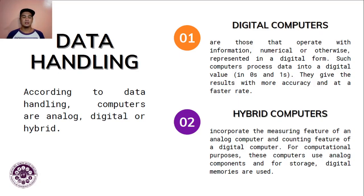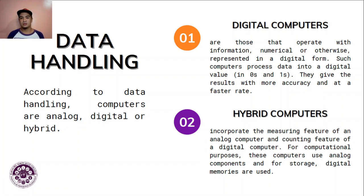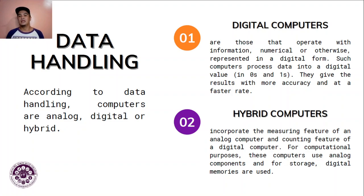According to data handling, computers are either analog, digital, or hybrid. Digital computers operate with information represented in digital form — they process data into digital values in zeros and ones, giving results with more accuracy and at a faster rate. Zeros and ones are what we call binary.